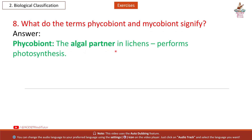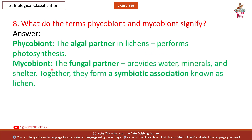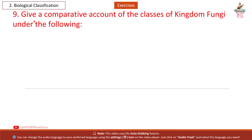Question 8: What do the terms phycobiont and mycobiont signify? Answer: Phycobiont is the algal partner in lichens and performs photosynthesis. Mycobiont is the fungal partner and provides water, minerals, and shelter. Together they form a symbiotic association known as lichen.